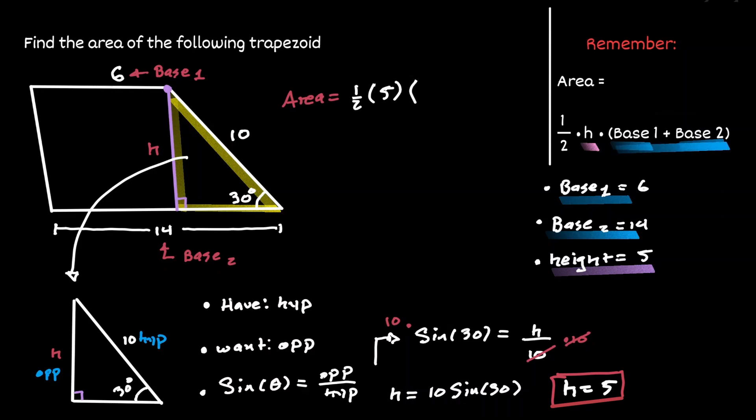So that would be 6 plus 14. Now let's simplify this result. When we multiply those three values we're going to get a value of 50.